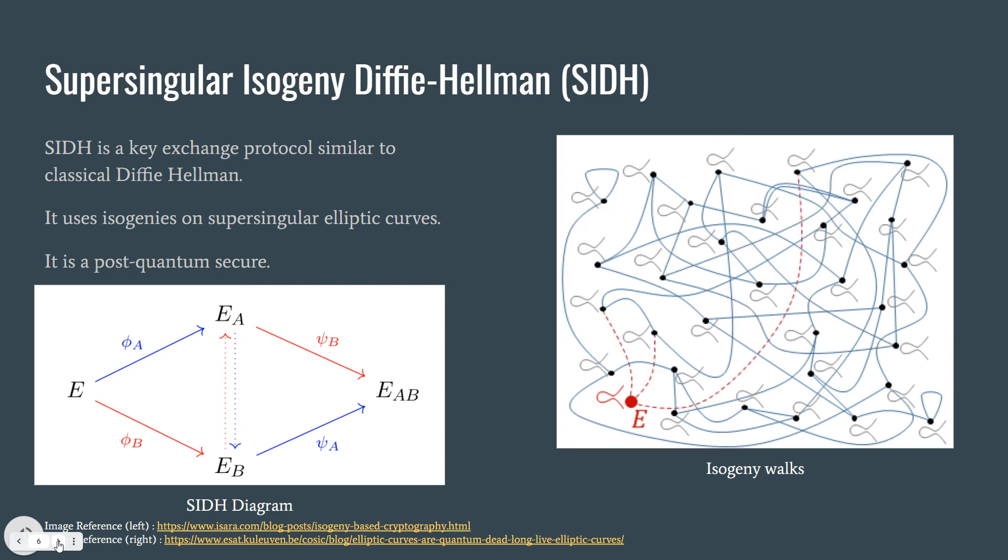On the picture on the left, it starts with the elliptic curve E and both parties compute the secret isogenies phi A and phi B. And they conclude with EA and EB, elliptic curves EA and EB. These results are public. They exchange with each other. After they exchange, each party computes new isogenies, psi B and psi A, to conclude with the final elliptic curve EAB.